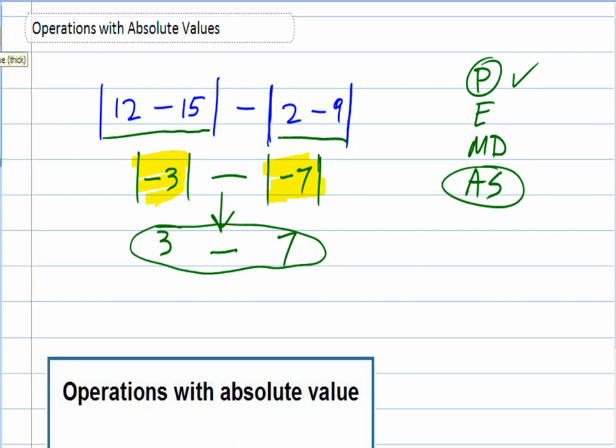So, now that those are gone, 3 minus 7. Signs are different. Subtract. Keep the sign of the larger. We get negative 4.